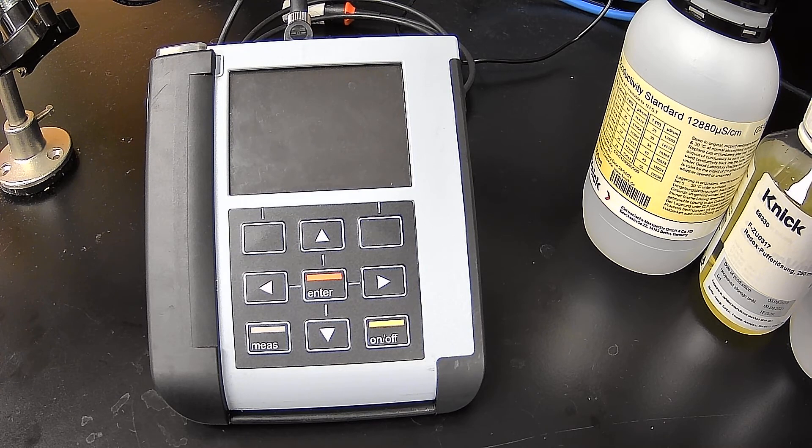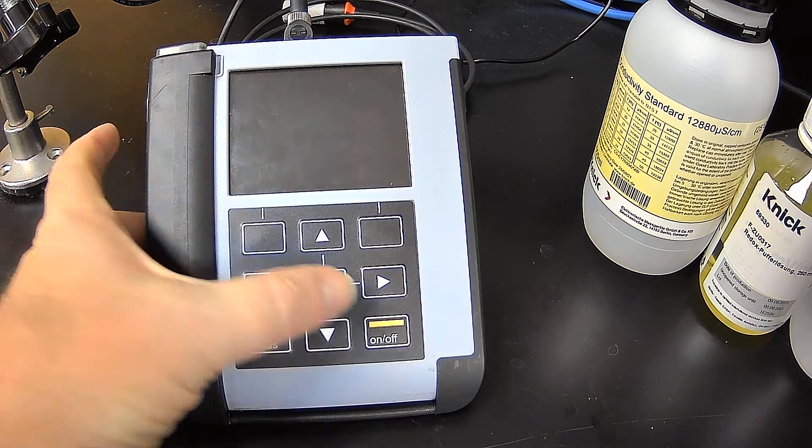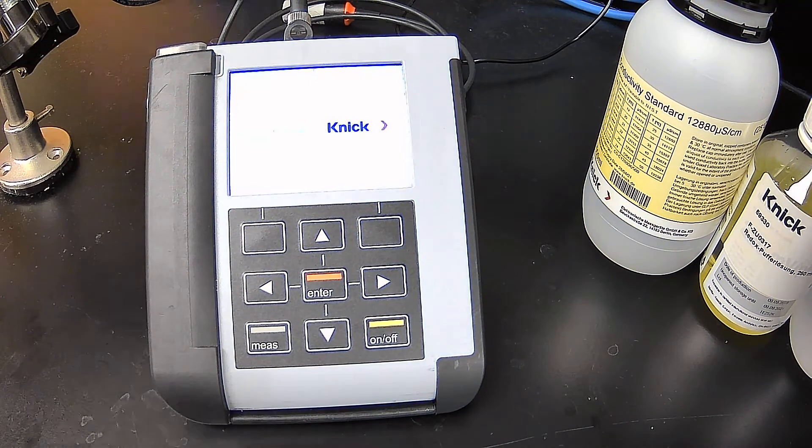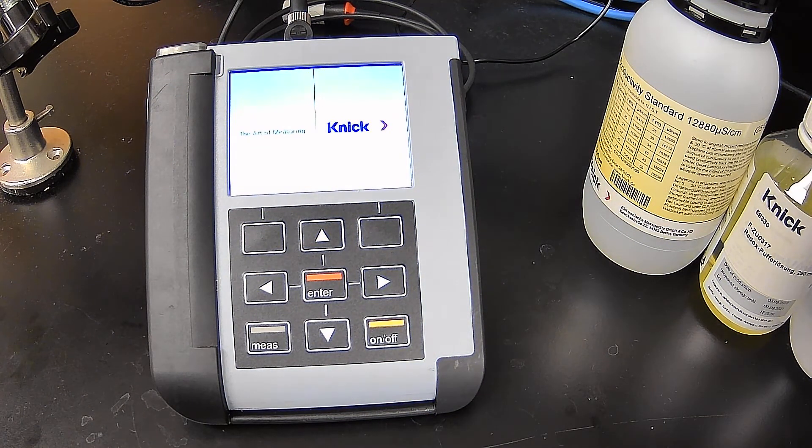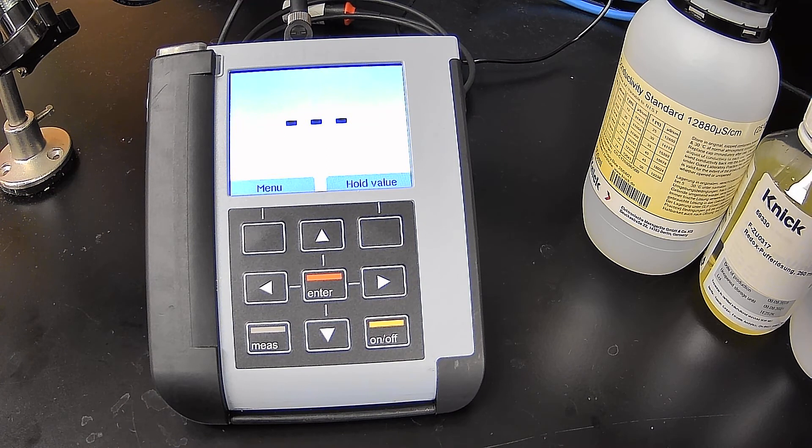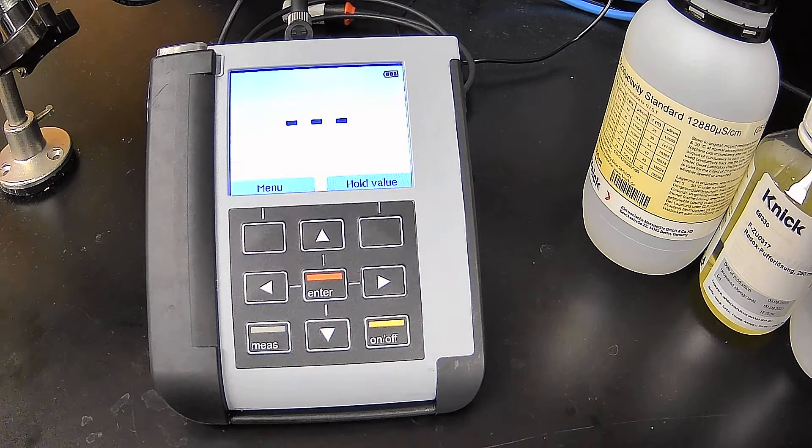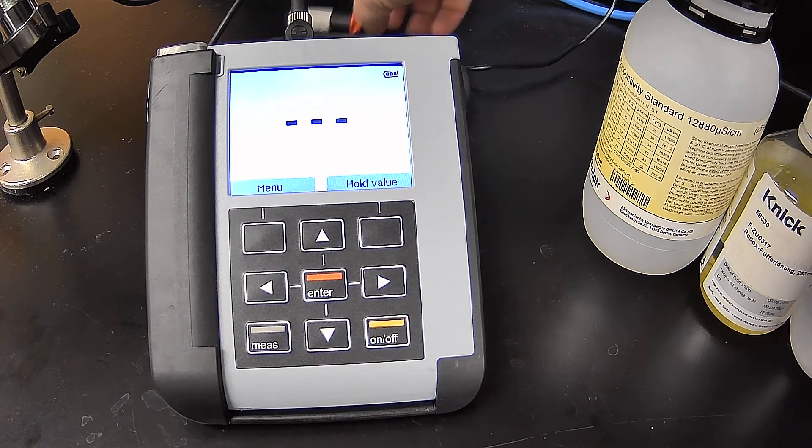But again, we're going to talk about the SE615. So what you see here is the 907. We're turning it on and there's no electrode currently connected to it, so it's showing us our battery life. We're fully charged.